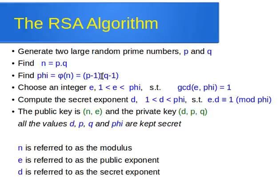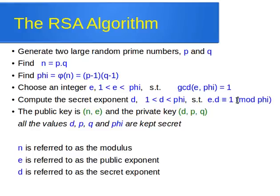After that, we choose an integer E such that E is larger than 1 and less than phi, and the GCD of E and phi equals 1 — meaning E and phi need to be co-prime or relatively prime. Then we compute what we call the secret exponent d, which also needs to be larger than 1 and less than phi, such that E times d is congruent to 1 modulo phi. I have a video on congruence in my YouTube channel.